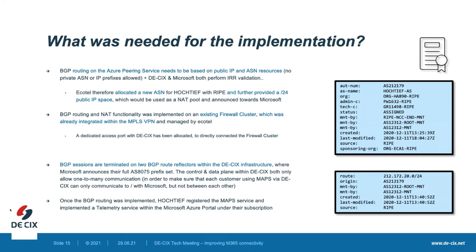Once the BGP routing and sessions were implemented, prefixes advertised towards Microsoft, failover testing completed, and everything confirmed ready to go — there is also an option to register a telemetry package within the Microsoft Azure portal subscription, which Hochtief also did. You can register your IP prefix and Microsoft will start measuring metrics towards that prefix from their point of view — latency, hops, packet loss. Within the Azure portal, you can also set alarming, for example to automatically send alerts via email, SMS, or push notifications if latency exceeds a defined threshold.